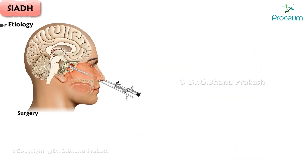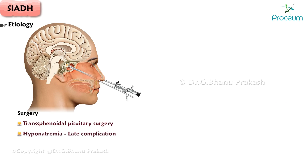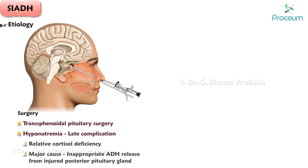Surgery, especially transsphenoidal pituitary surgery. Hyponatremia is a common late complication of transsphenoidal pituitary surgery. Although relative cortisol deficiency may contribute, the major cause is inappropriate antidiuretic hormone release from the injured posterior pituitary gland.